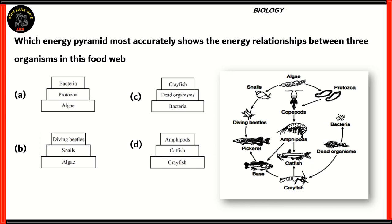This is the first question in biology. Which energy pyramid most accurately shows the energy relationships between three organisms in this food web? This is a food web which shows which organisms consume other organisms, and we have to find out which of these energy pyramids accurately shows the energy relationships. An energy pyramid basically shows which organism consumes another, and so on.